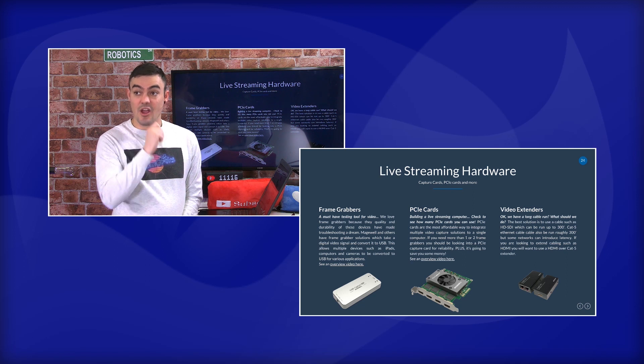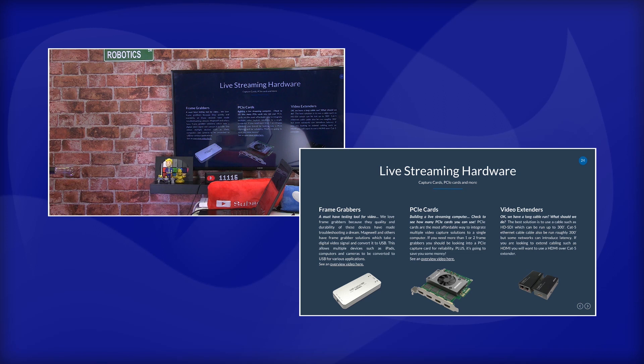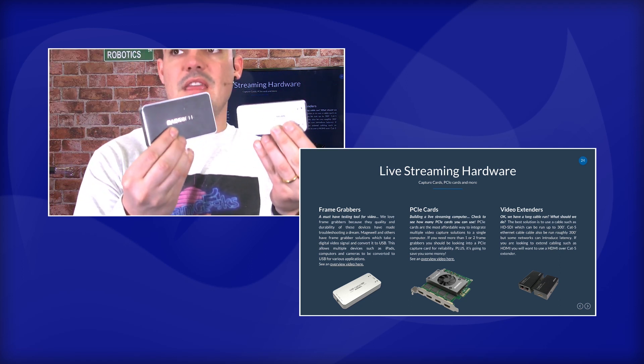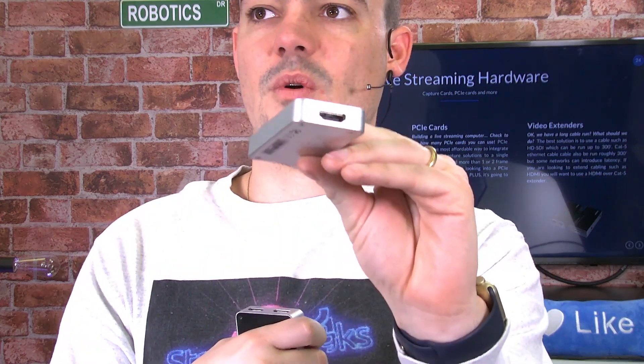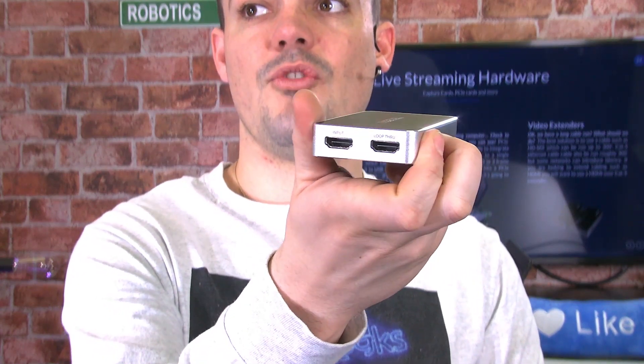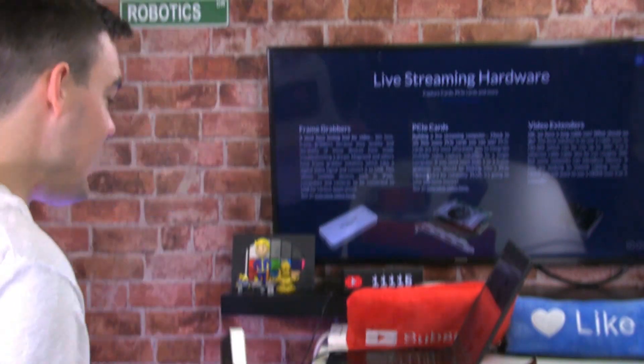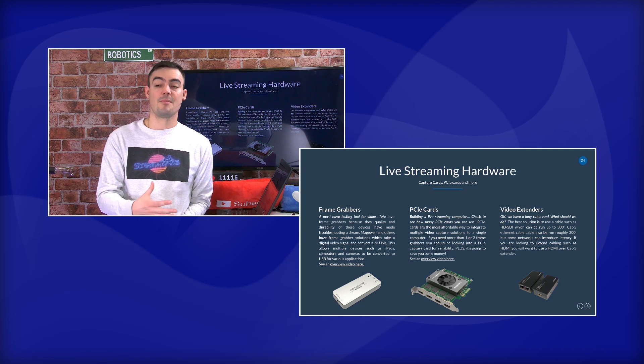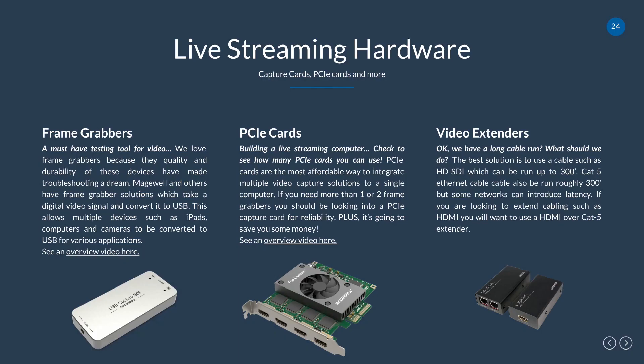Frame grabbers are USB HDMI or SDI to USB capture devices. Here's a single-channel HDMI to USB one, and here's one with an HDMI loop-through — HDMI in, HDMI out, with USB — so you can take any professional HDMI source like a pastor's laptop or camcorder and make it available to your live streaming computer. If you have a PCIe card slot, you can put it into a custom-built computer. I highly suggest custom-built computers — your church will save thousands compared to $5,000 branded live streaming systems.